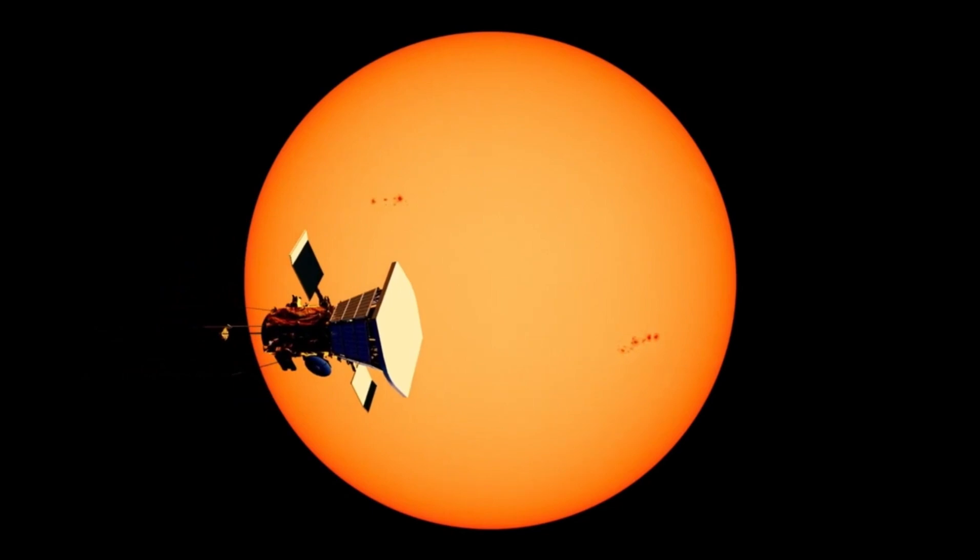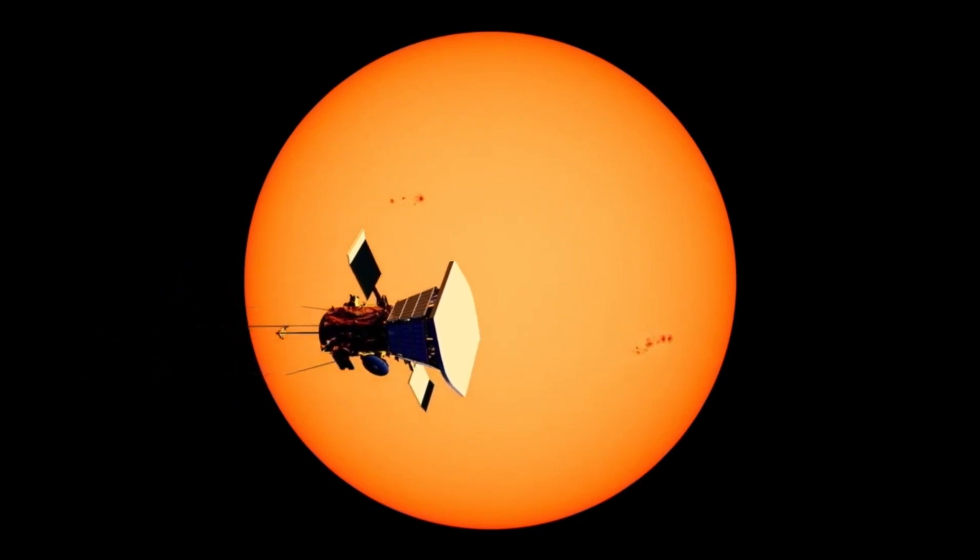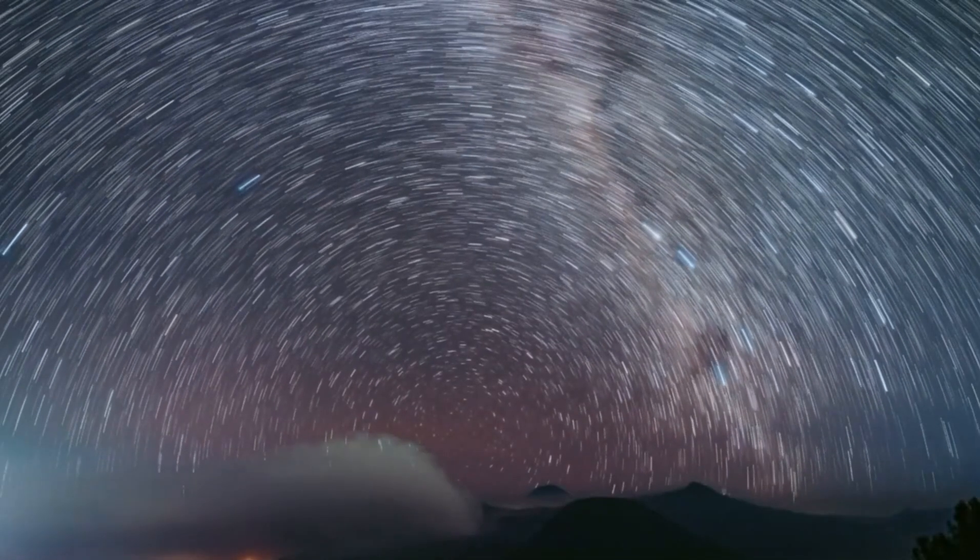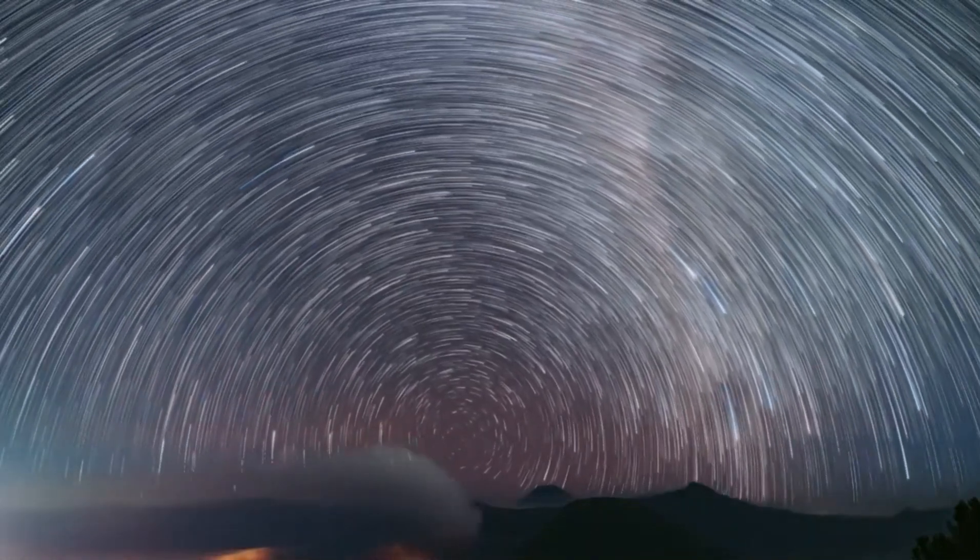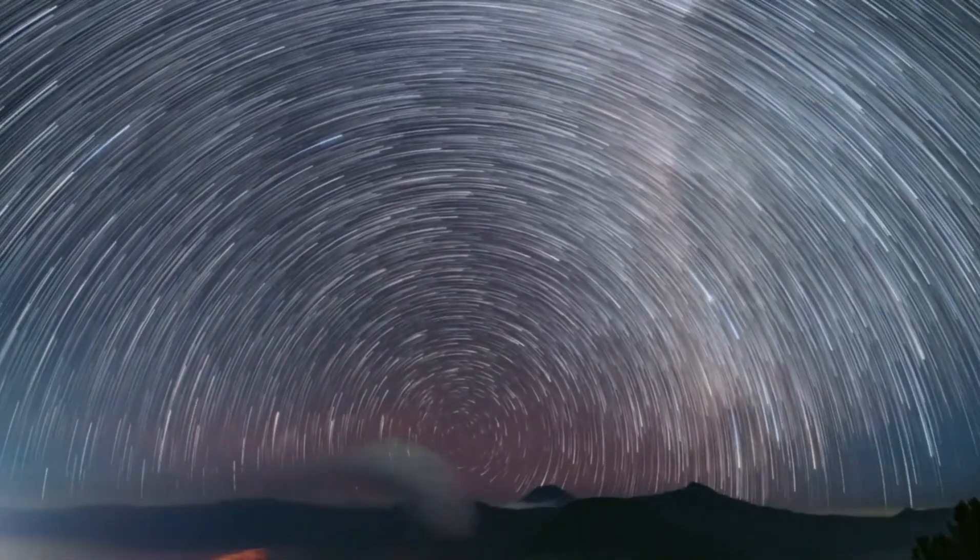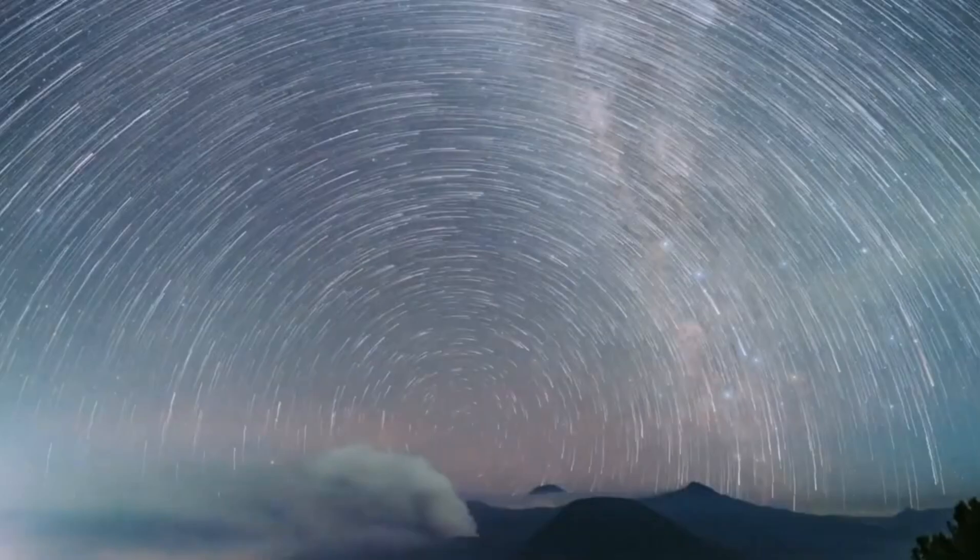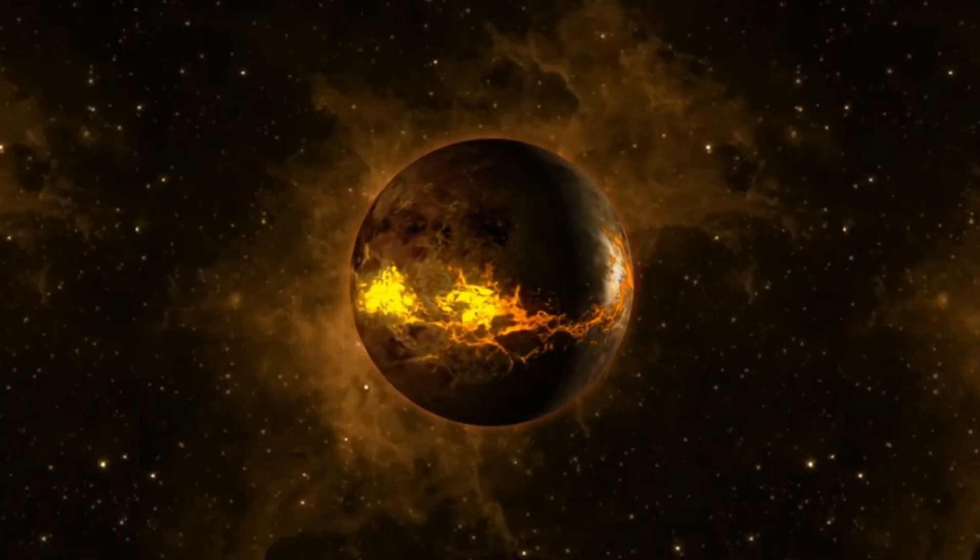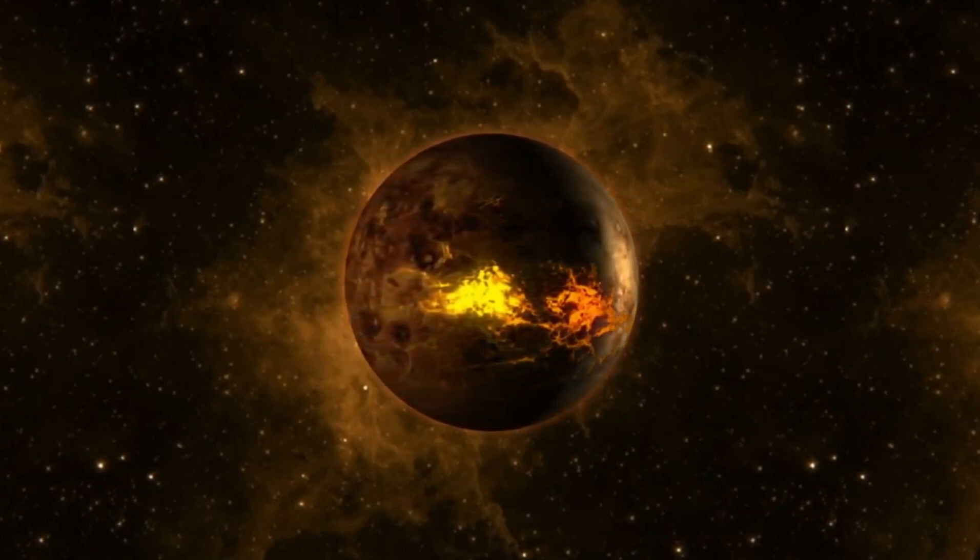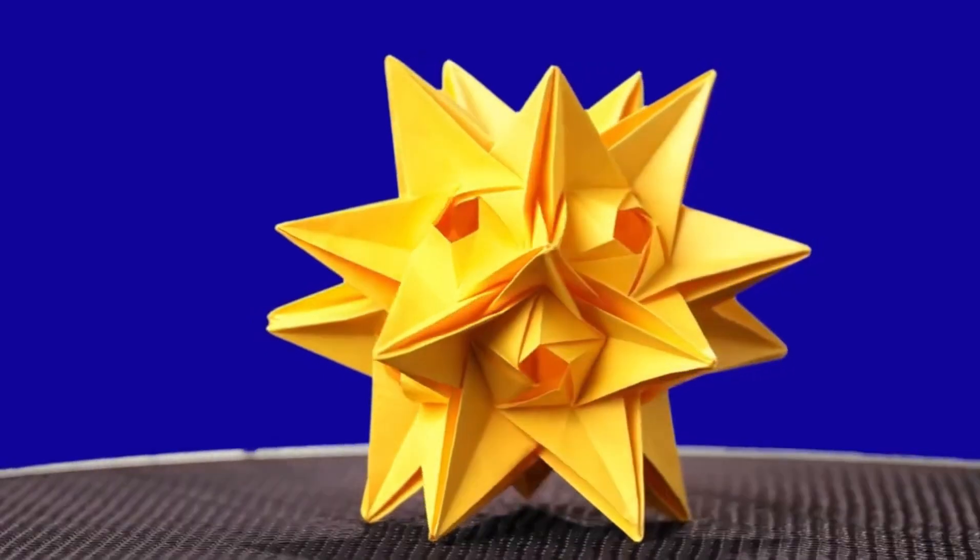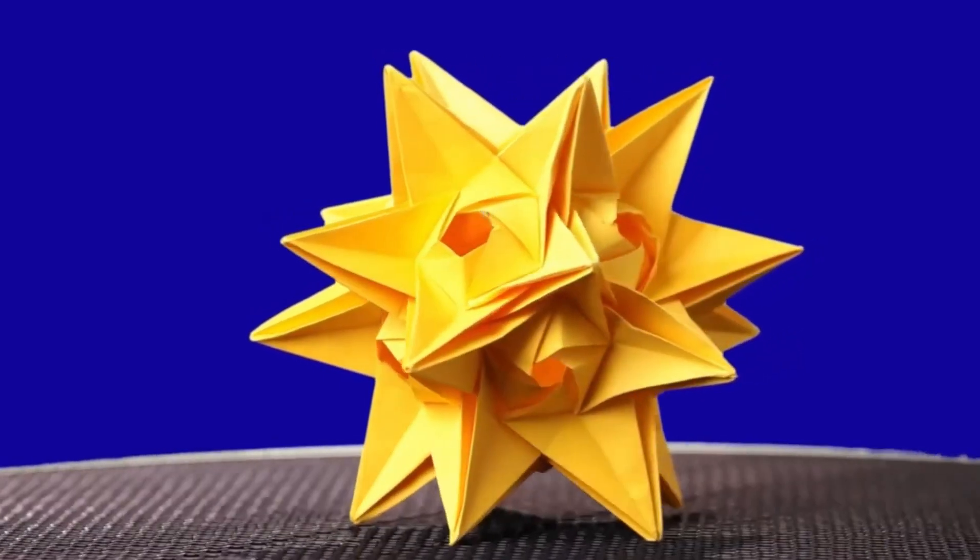Betelgeuse's distinctive reddish hue is another hallmark of its current stage. The red color is a result of its relatively cooler surface temperature compared to other stars like our Sun. While the Sun's surface temperature is about 5,500 Kelvin, Betelgeuse's cooler surface registers temperatures around 3,500 Kelvin.